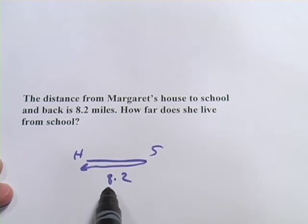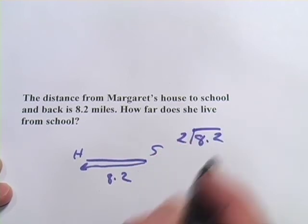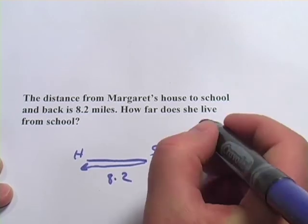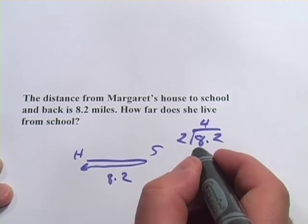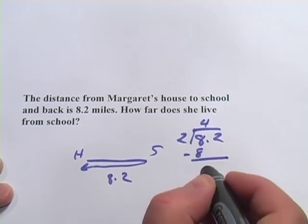So what we really need to do is divide this by 2. So we'll set up the division problem, 8.2 divided by 2. We'll do it the same way. How many 2's can fit into 8? Well, 4 can. 2 times 4 is 8. We'll do our subtraction and we get 0.2.